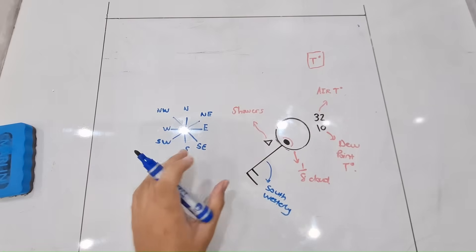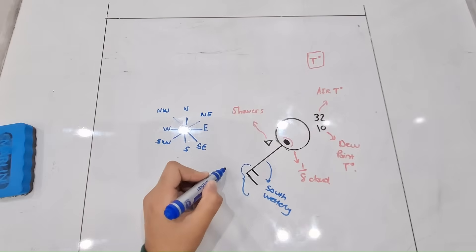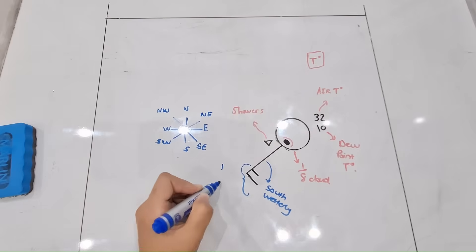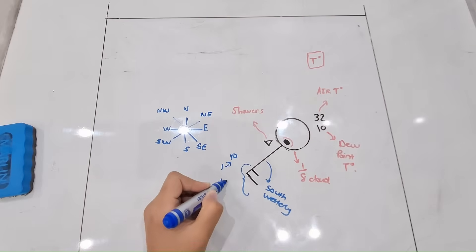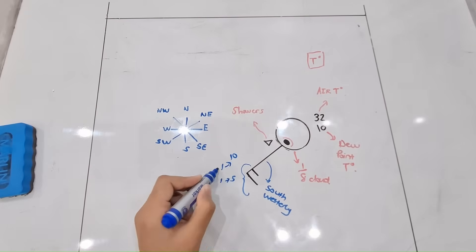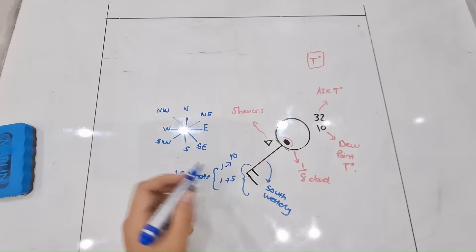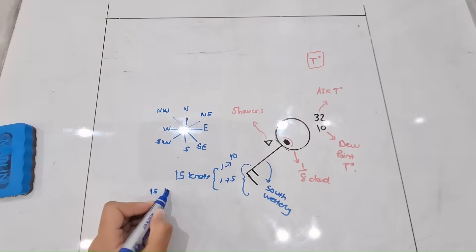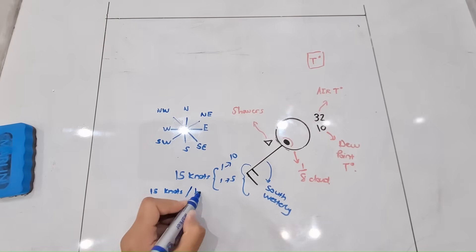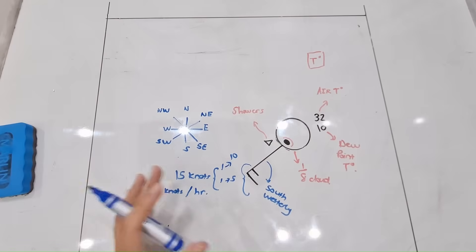Lastly, we can see these two lines representing wind speed. One long line represents 10 knots and one short line represents 5 knots, giving a total of 15 knots. Remember your answer must be in the form of knots per hour, so we say 15 knots per hour. Nothing too complicated — simple and easy.